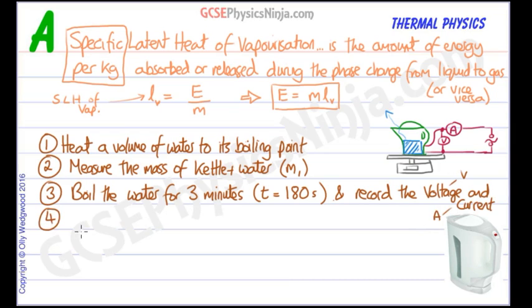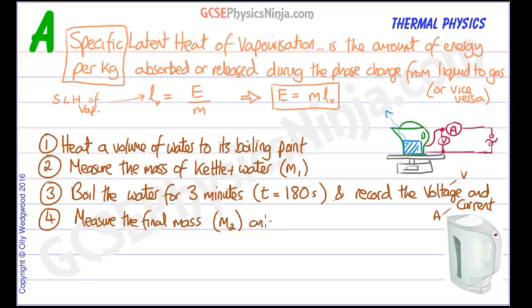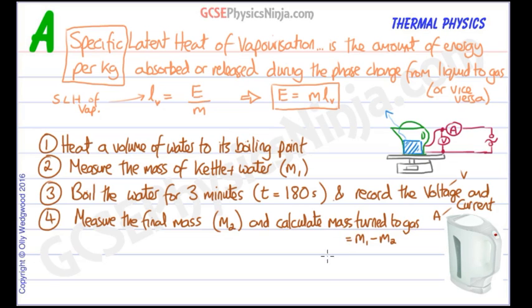Step four: once it has been boiling for three minutes, turn it off and measure the final mass of the kettle plus water — call that M2. Then calculate the mass turned to gas, which is simply M1 minus M2. The mass of the kettle cancels out, leaving just the mass of water lost as steam.